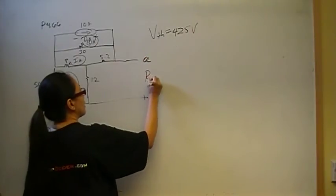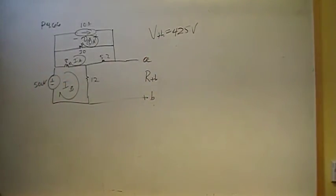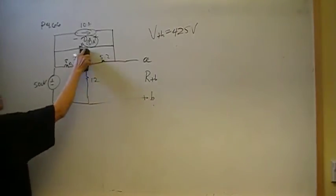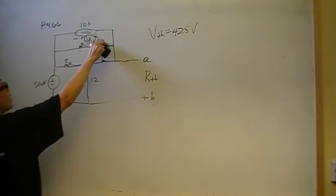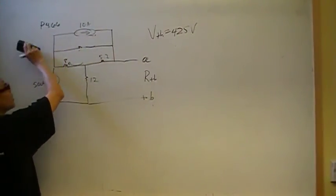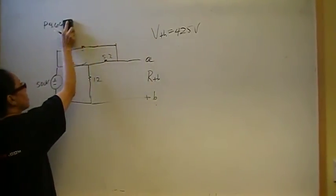So R-Thevenin is the resistance seen by the load when we eliminate the power sources. So let's go ahead and restore the circuit. We're going to open. So first we're going to open the current sources. So that's gone.